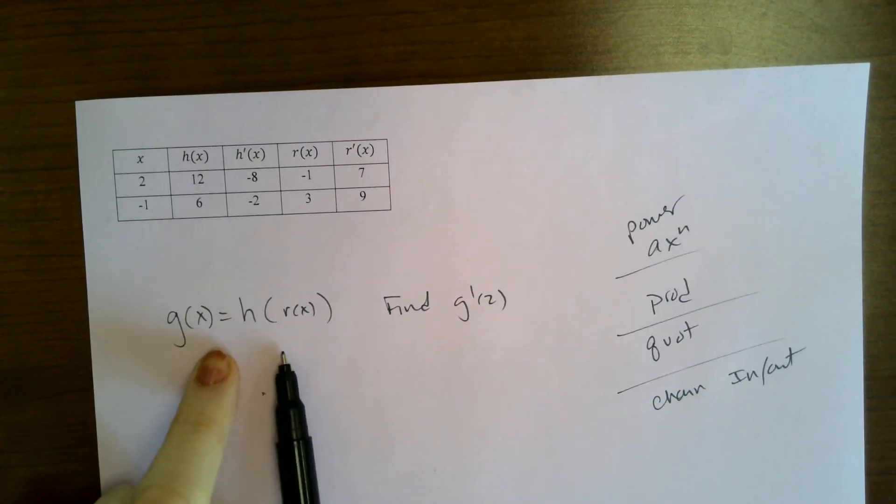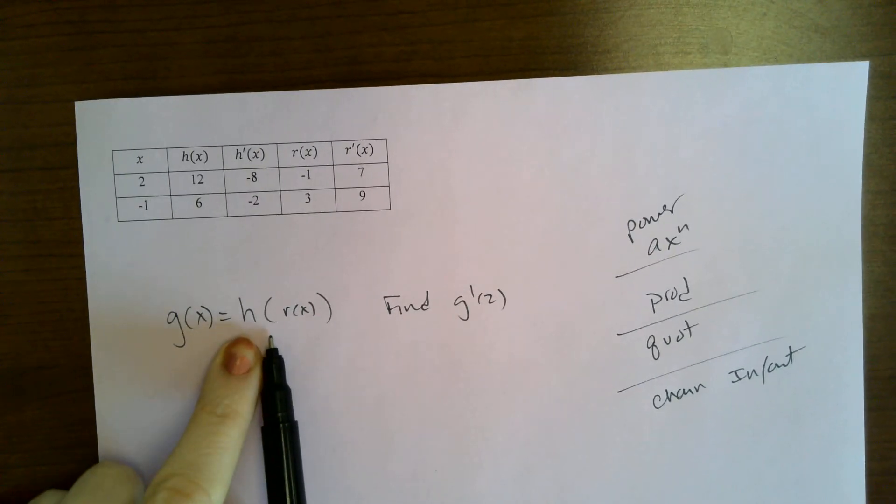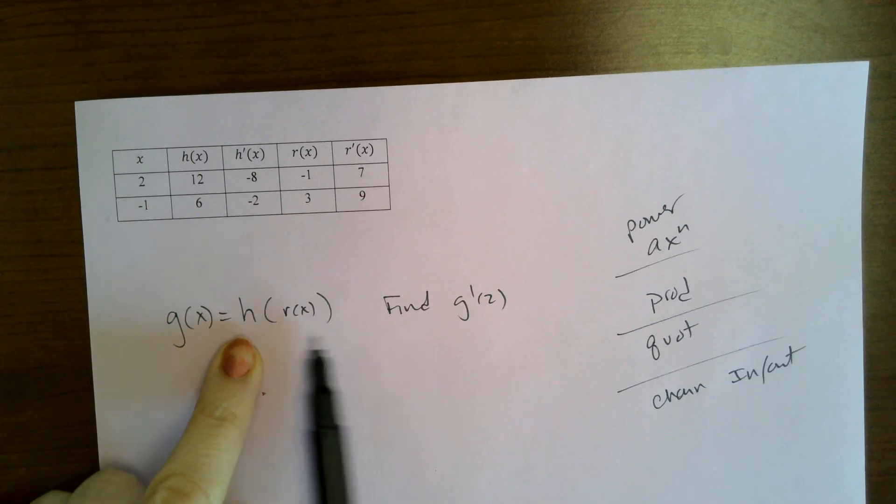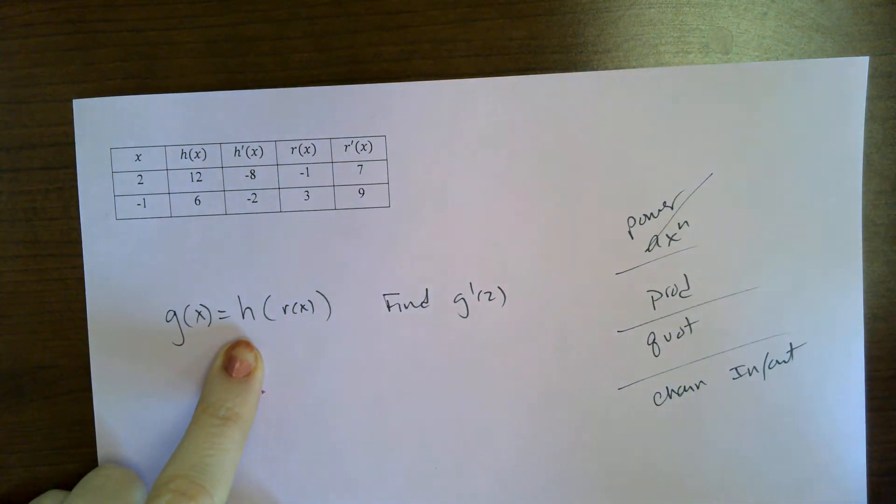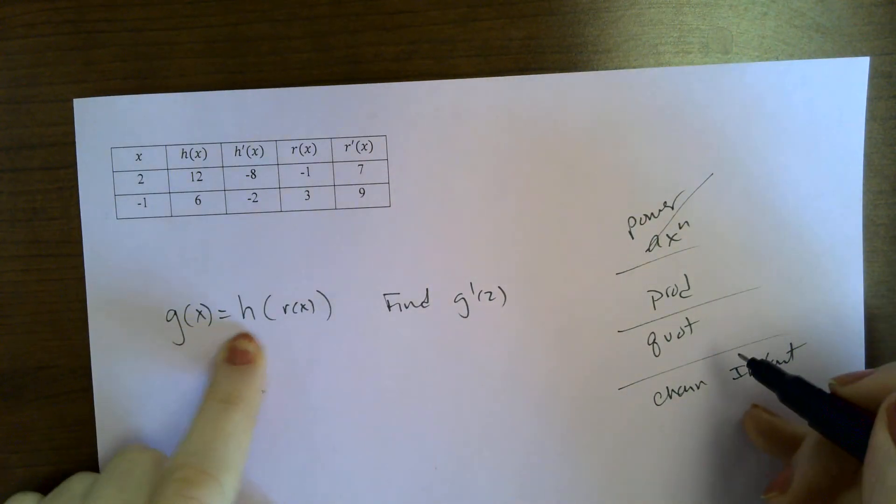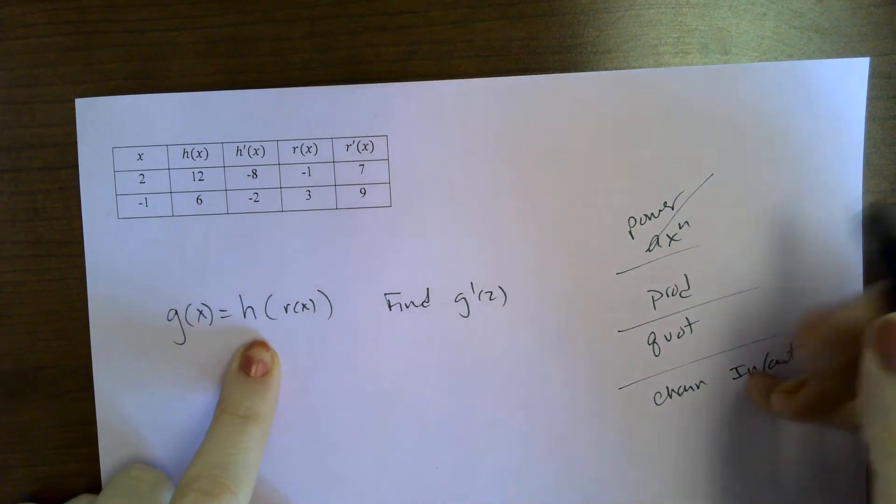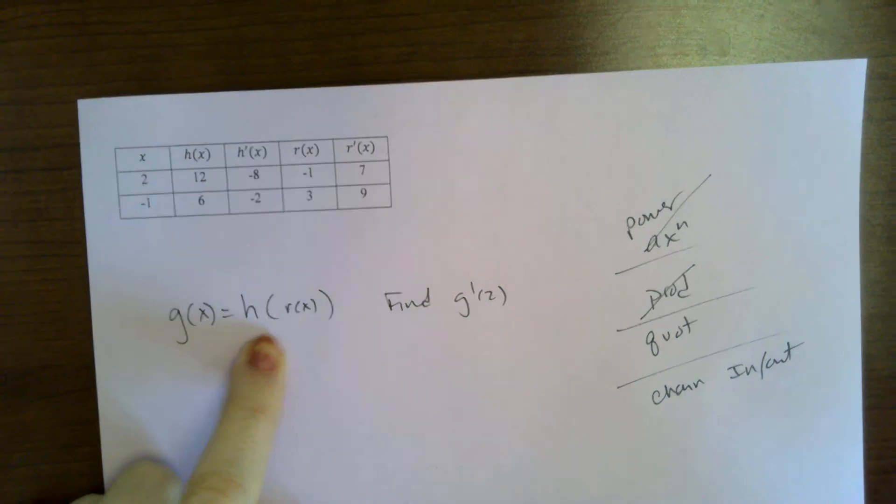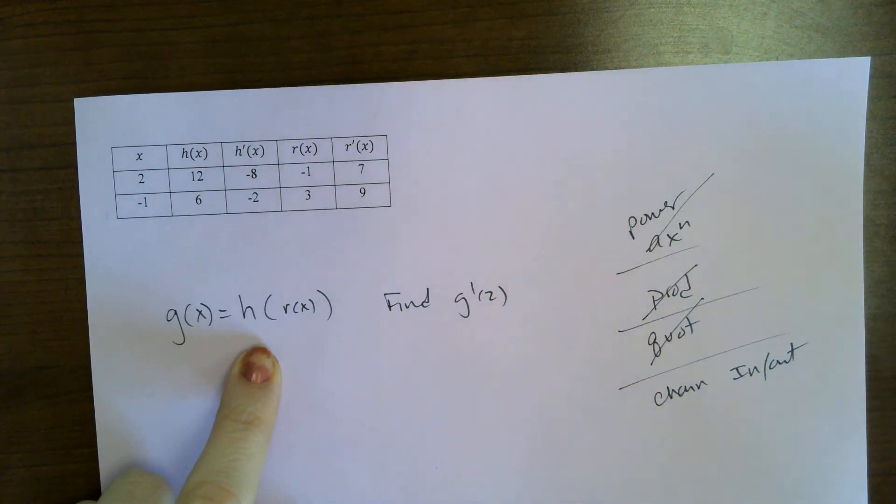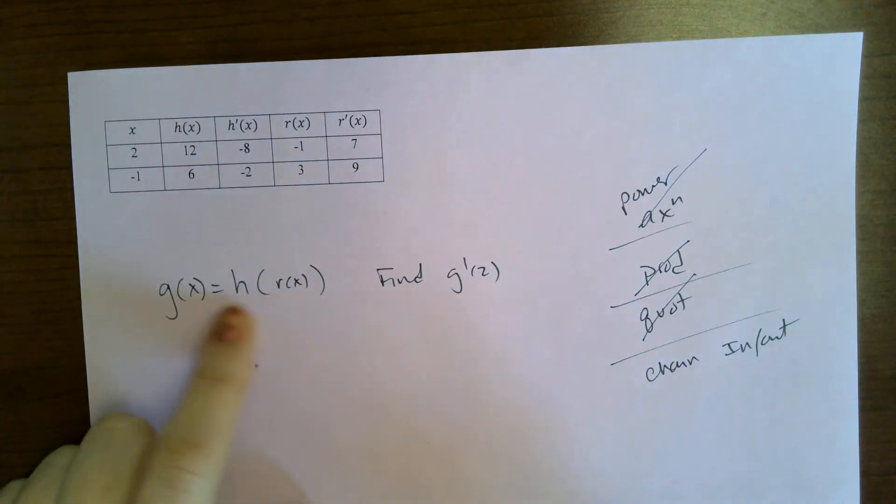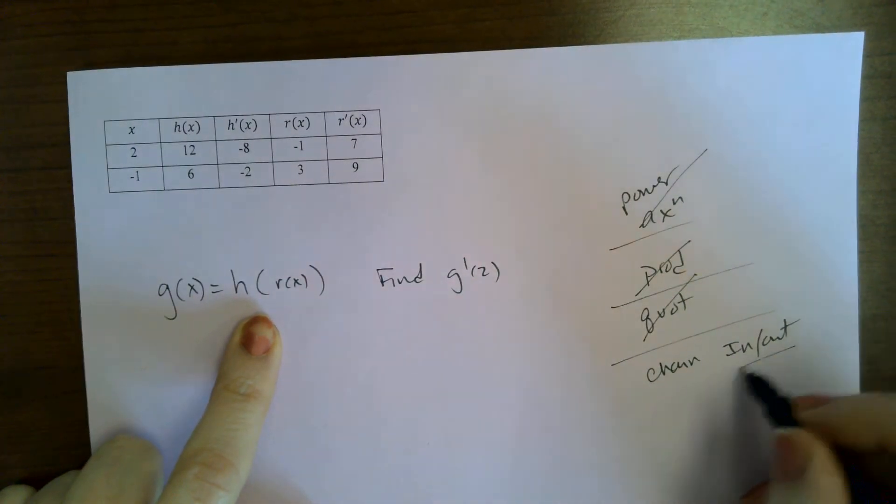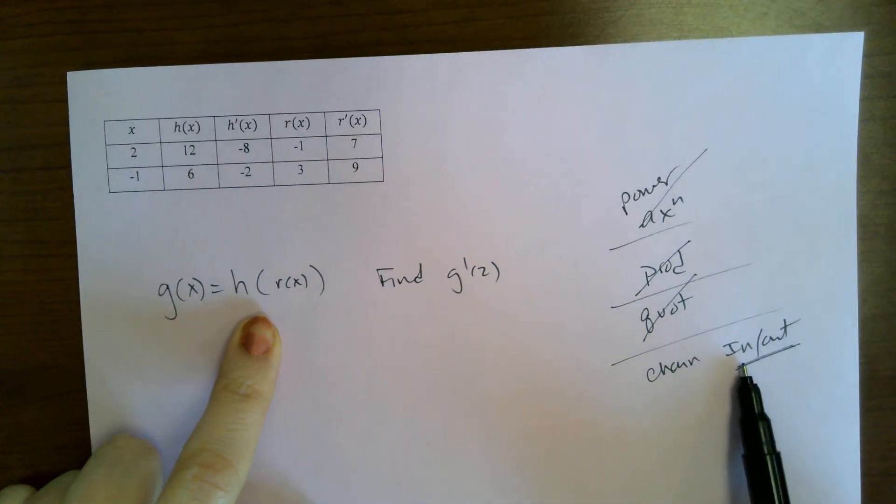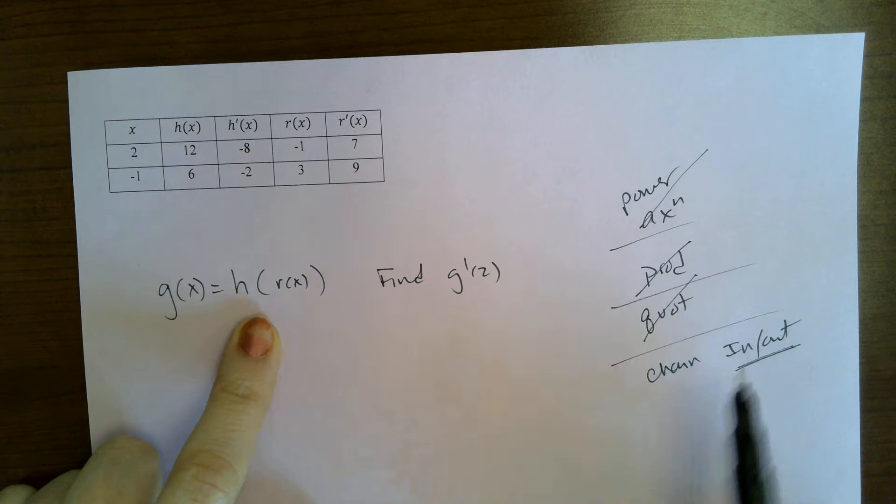So far, looking at this g, so this is g of x. G of x is h of r of x, and we want to find g prime of two. It is not of that form, so we're not going to use power rule. This is not a product of two functions, neither is it a quotient of two functions.